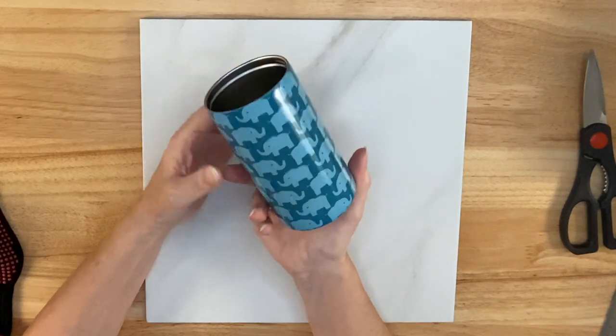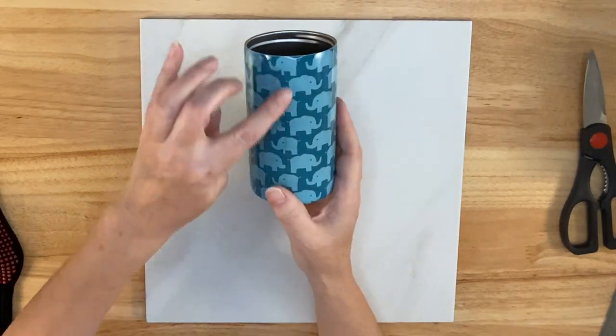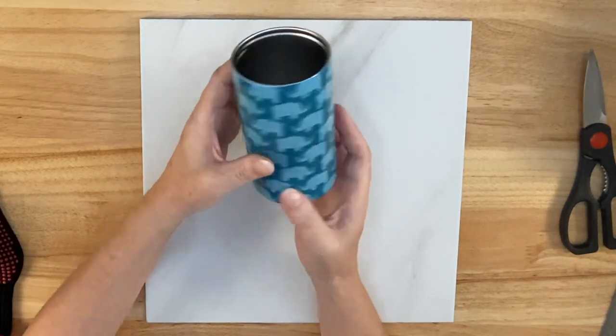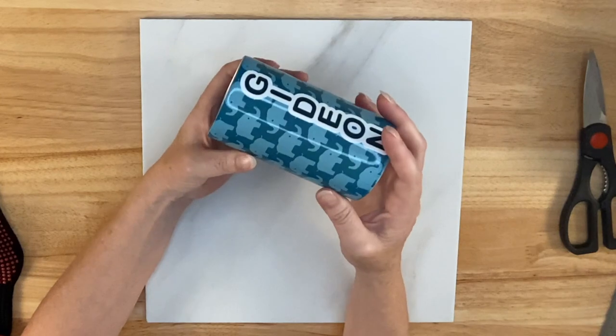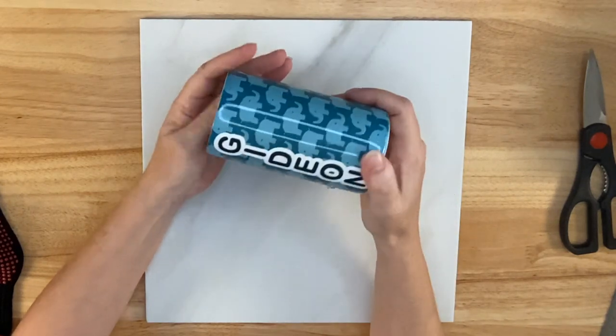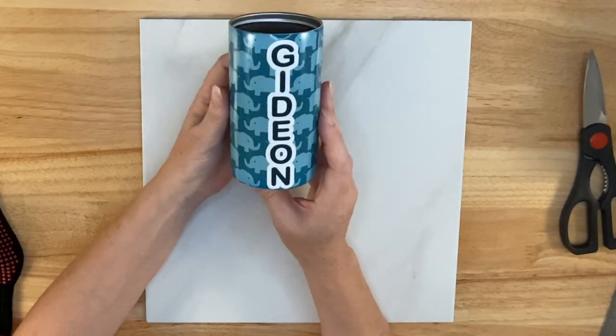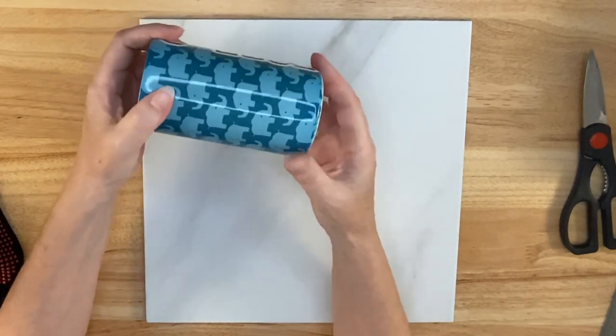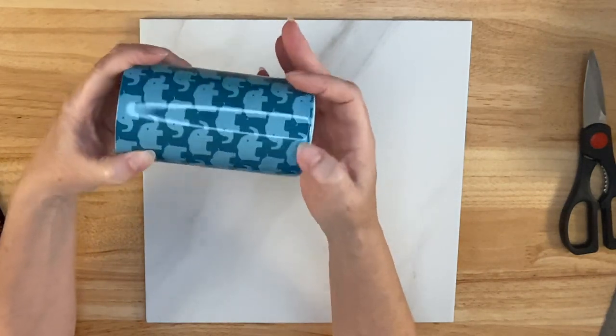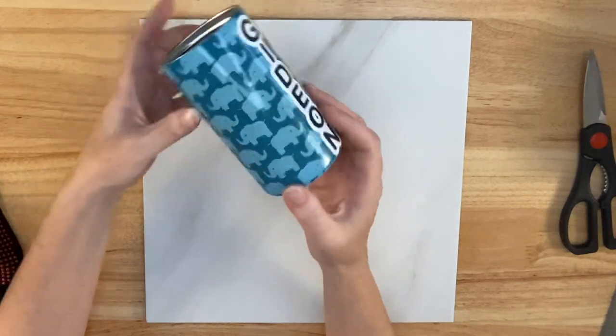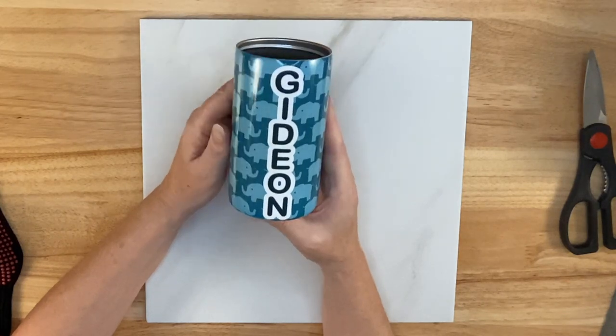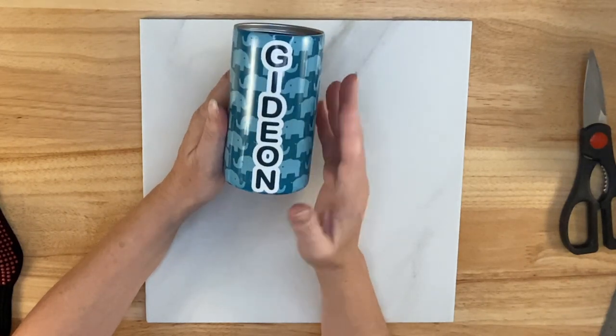Alright, so here's the tumbler. My seam's pretty good. It almost lined up. The top looks really nice. And then the name Gideon looks really nice. Now, I didn't do a perfect job at the bottom. It's nice. It's passable. But I've done better. All in all, I think this turned out gorgeous. I think that my friend's going to love it. And hopefully Gideon does too.